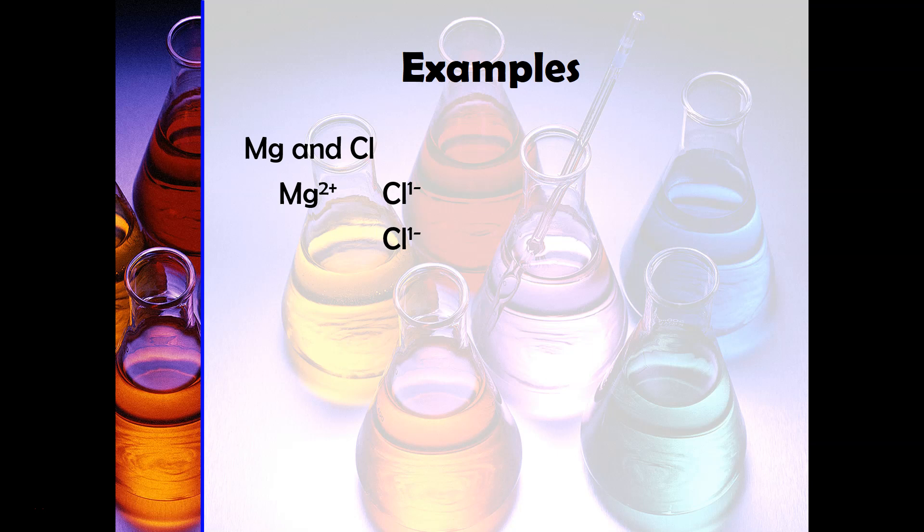When you add the chloride ion you now have a net charge of plus two and a net charge of minus two that will give you a neutral compound. And so when you write the formula you're going to have one magnesium and then two chloride ions so you're going to write MgCl2. Notice that in a formula because the formula is neutral you do not actually put the charges in there.